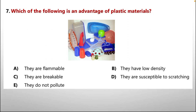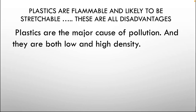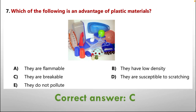Question 7: Which of the following is an advantage of plastic materials? Options — A: they are flammable, B: they have low density, C: they are breakable, D: they are susceptible to stretching, E: they do not pollute. Plastics being flammable and stretchable are disadvantages. Plastics are a major cause of pollution. Low-density polyethylene (LDPE) is a thermoplastic that is flexible but breakable, and considered relatively safe. So option C — they are breakable — is actually an advantage of plastic materials, as breakable materials are useful in certain activities.